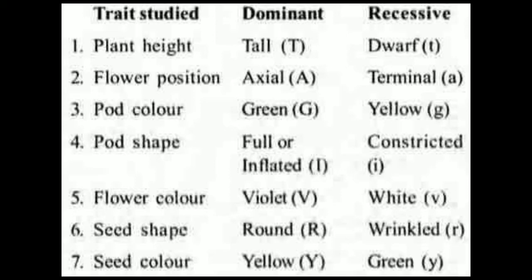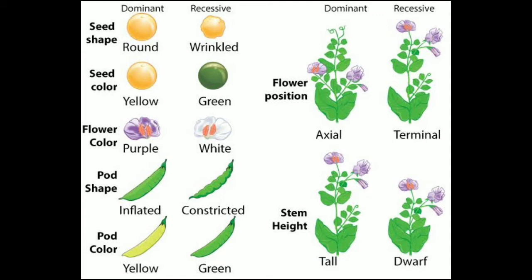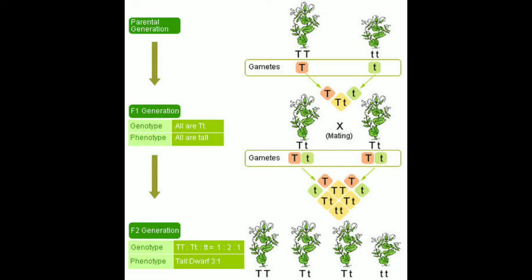During his experiment, Mendel obtained a monohybrid ratio of 3:1. He crossed two types of plants with contrasting characters — for stem height, some plants were tall and some were dwarf. He crossed the tall parent with the dwarf parent, treating one as male and the other as female, considering only one contrasting character. This is called the monohybrid cross.